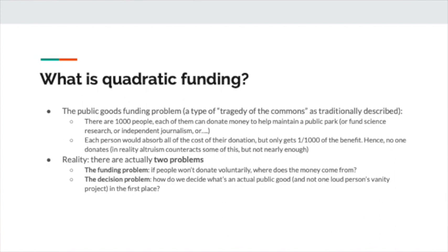For example, if Alice donates a dollar, Bob donates a dollar, Charlie donates a dollar, the mechanism decides that because Alice, Bob, and Charlie are each only getting one third of the benefit from their donation, if they got all of the benefit they would have donated three dollars each — so three dollars times three people is nine dollars. But they actually donated three dollars. The nine minus three — that extra six — gets given to the project out of the subsidy pool. The idea is to mathematically cancel out the tragedy of the commons. One way to think about this is that the mechanism is democratic in the sense that it favors things supported by broad groups of people over things supported by small concentrated groups.